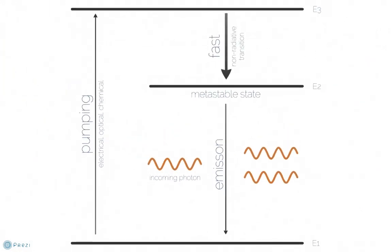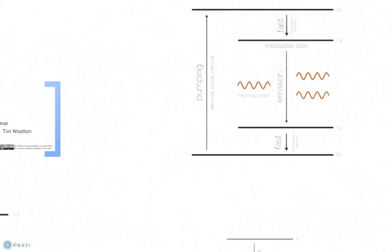The output of this stimulated emission process is the initial photon and the photon via stimulation. Although the population of atoms at E2 is larger than at E1 due to population inversion, there is still a significant number of atoms at E1, reducing the amplification gain of the system. This leads us to a four energy level system.